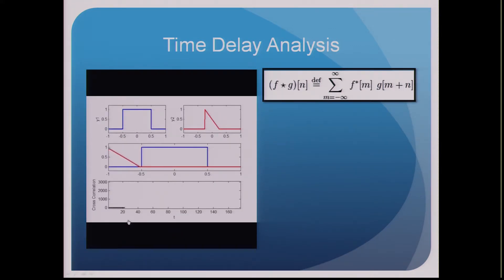Essentially, cross-correlation is a popular technique in information theory to determine the similarity between two signals, and it's defined by sliding one signal across the other and computing its sum of products.